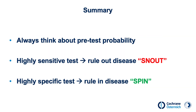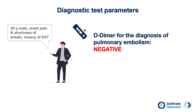In summary, first think about the pre-test probability before doing a test. Secondly, sensitivity and specificity have different implications: a highly sensitive test can be used to rule out the disease — remember SNOUT — whereas a highly specific test can be used to rule in the disease — remember SPIN. Back to our patient: the D-dimer test was negative. Because of the high sensitivity of the test, the doctor is quite confident that pulmonary embolism can be ruled out, thinking of SNOUT. The doctor then starts with other diagnostic tests to find the reason for the chest pain and shortness of breath.